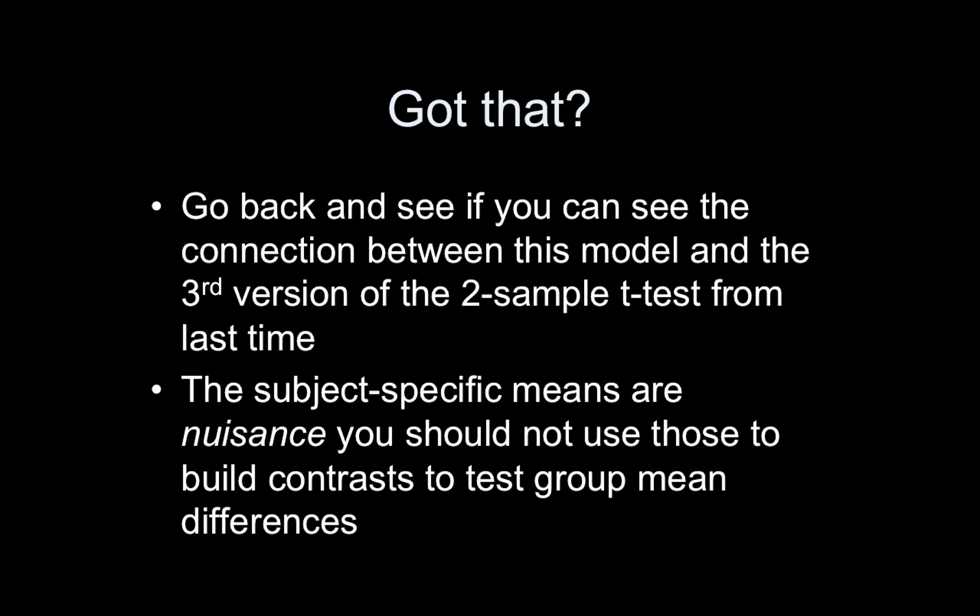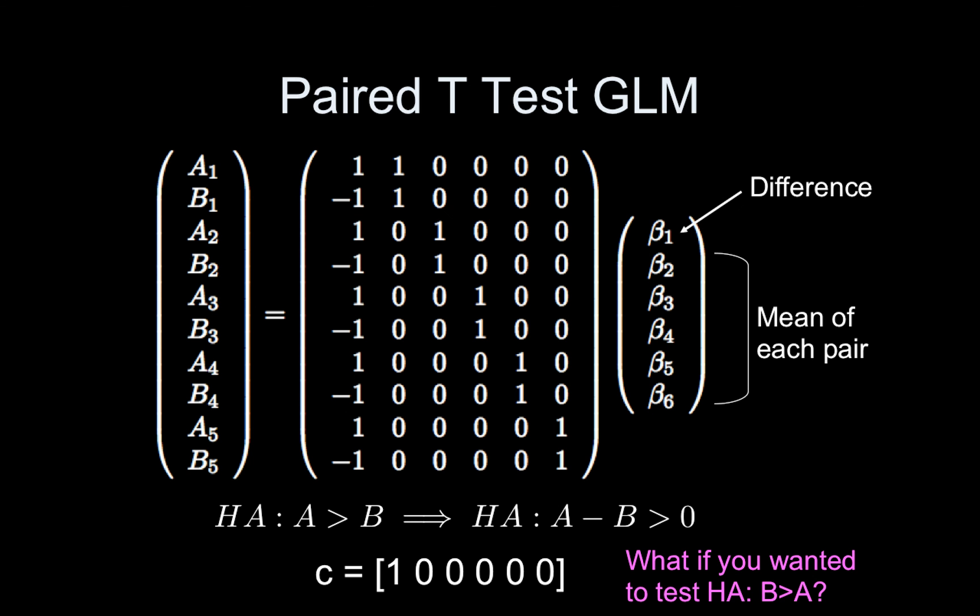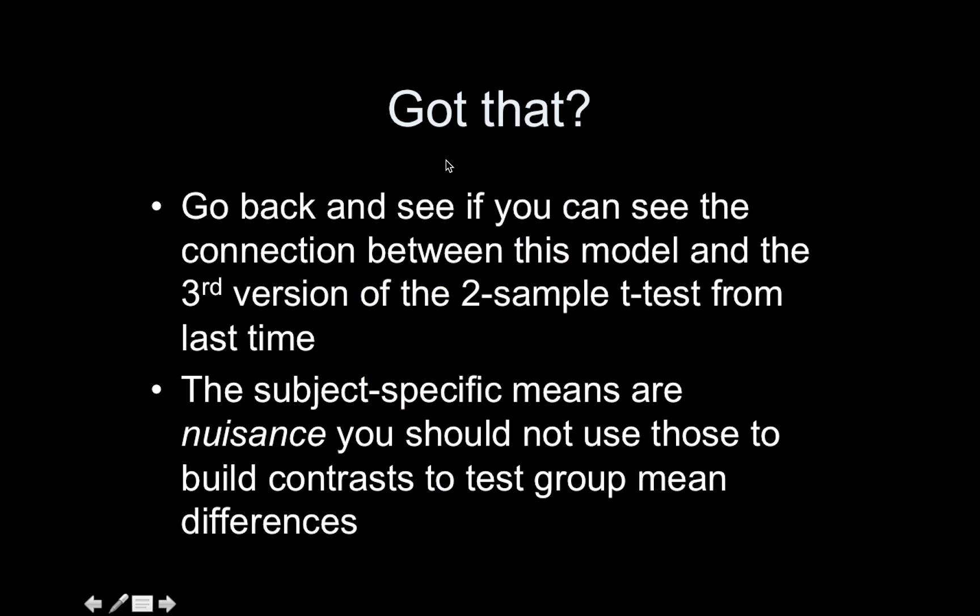Hopefully you have that. Go back and see if you can see the connection between this model and the third version of the two-sample t-test from last time. They actually look really similar. I'll give you a hint. You just look. They're very similar. And just a reminder, the subject-specific means are nuisance parameters. You shouldn't use those to build contrast to test group mean differences because the residuals are artificially deflated for that comparison.